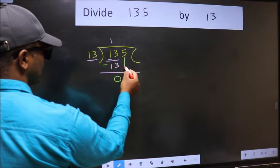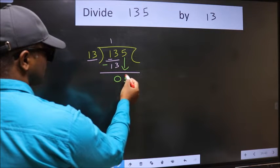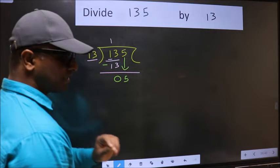After this, bring down the beside number. So, 5 down. After this step, the mistake happens. And the mistake is this.